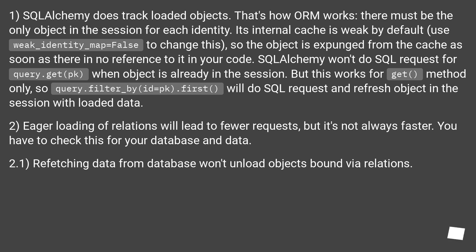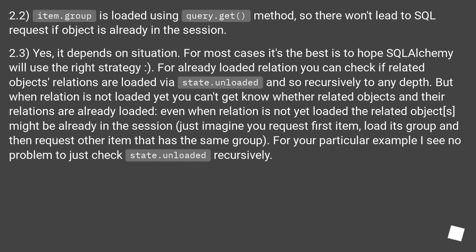But this works for the get method only, so query.filter_by(id=pk).first() will issue a SQL request and refresh the object in the session with loaded data. 2: Eager loading of relations will lead to fewer requests, but it's not always faster — you have to check this for your specific database and data. 2.1: Refetching data from the database won't unload objects bound via relations.